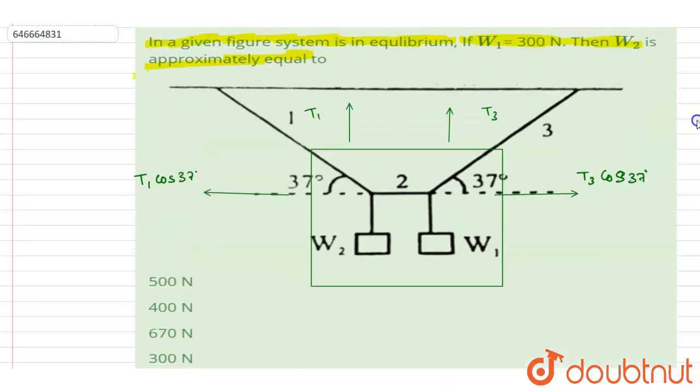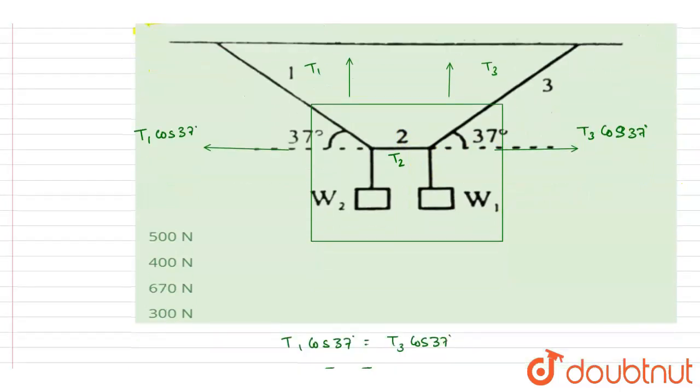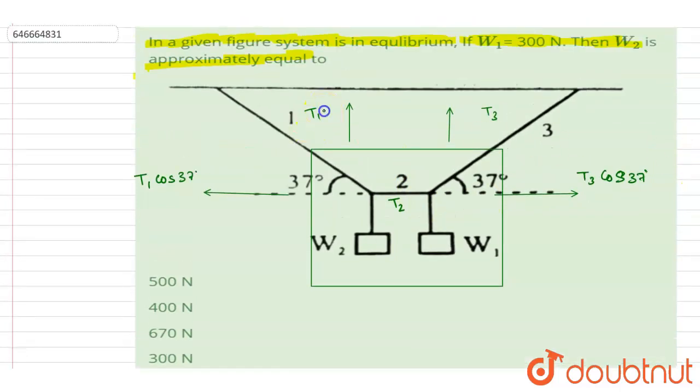We got this right, so T1 and T3 are the same. Now if you see here the tension is T2. If you see the vertical forces on them, this is sin 37 and this is also sin 37.